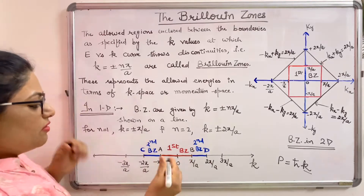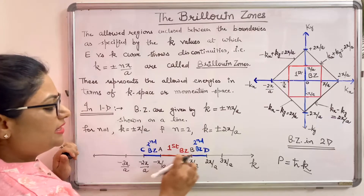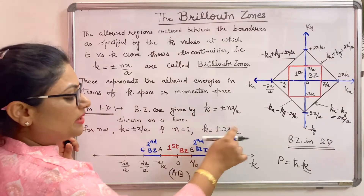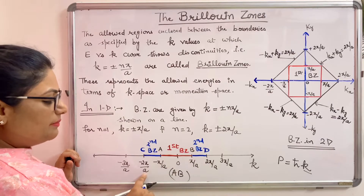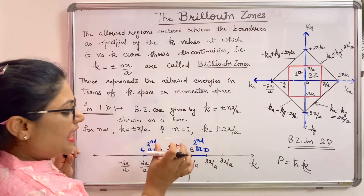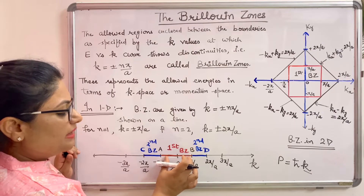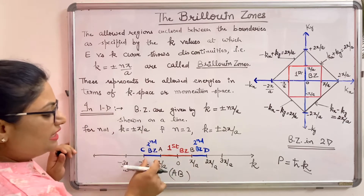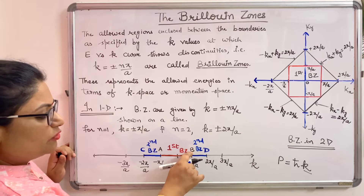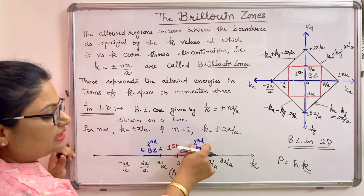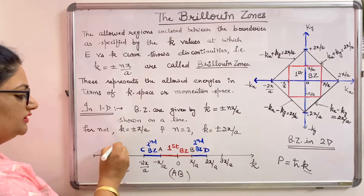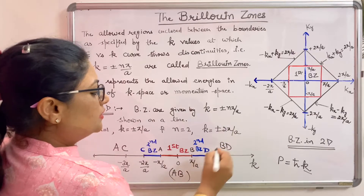In terms of 1D, the first Brillouin zone is a line segment AB, representing the first allowed band. For the second allowed band, the boundaries appear at plus or minus 2 pi by a. The line segment enclosed between plus or minus 2 pi by a, excluding the first allowed band, represents the second allowed band — from C to A, then B to D. So the second Brillouin zone consists of two line segments: CA and BD.